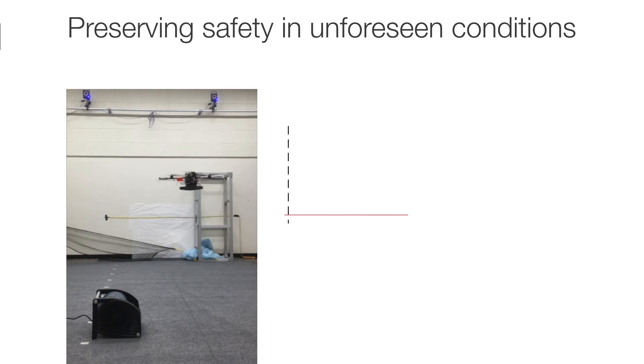Here is Bayesian safety validation at work. The quadrotor is flying under the same reinforcement learning algorithm. But now, by turning on a fan, we introduce a strong local disturbance that neither the learning algorithm nor the safety analysis have accounted for.